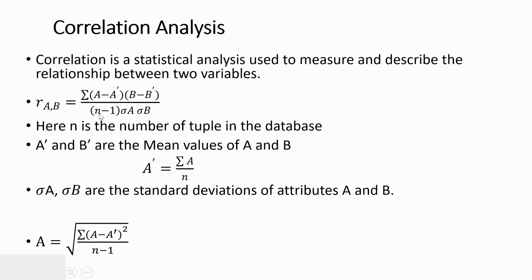Sigma A and sigma B are the standard deviations of A and B respectively. The standard deviation sigma A is calculated as the square root of sigma (A minus A-bar) squared, divided by N minus 1. This equation is used to find out the correlation analysis.